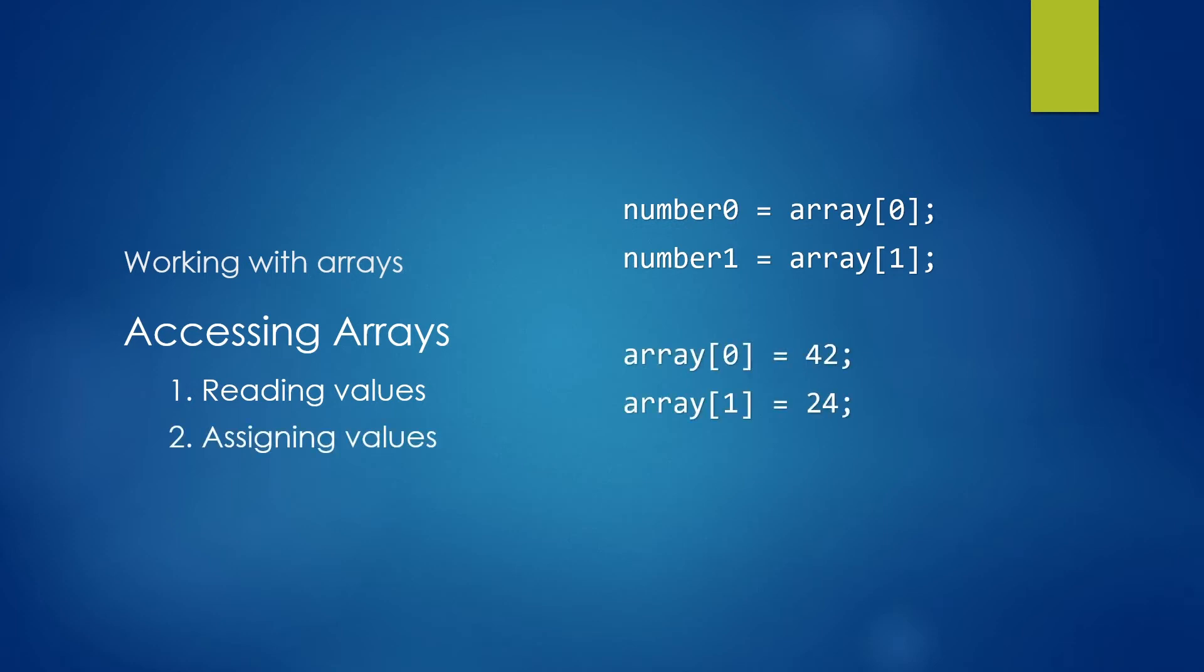Assigning values is quite similar. You can say array at position zero equals 42. And similarly, you could say array at position one equals 24.